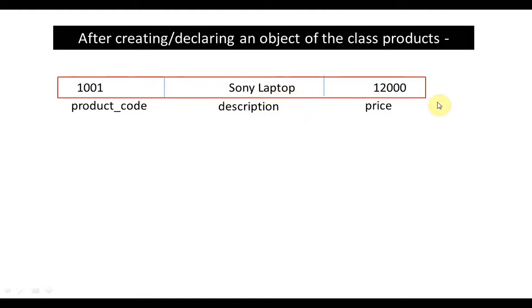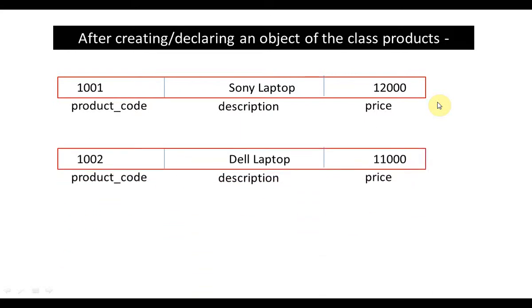Of course, when we will be having objects, we will be supplying some values also. So similarly, if I happen to declare another object of the same class products, I am going to have another object. But as you can see, the structure of this object is exactly the same.